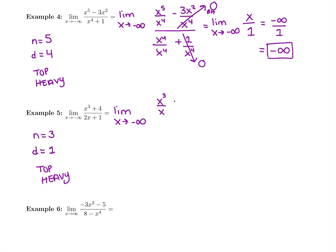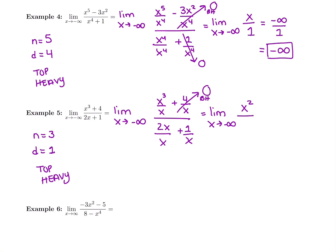So we're going to do x cubed divided by x, plus 4 divided by x, then 2x divided by x, plus 1 over x. We want to simplify and cross out all bottom-heavy terms. In the top, x cubed divided by x is x squared. And 4 over x goes to 0 — it's bottom-heavy. Then 2x divided by x is 2. And 1 over x goes to 0 — it's bottom-heavy.